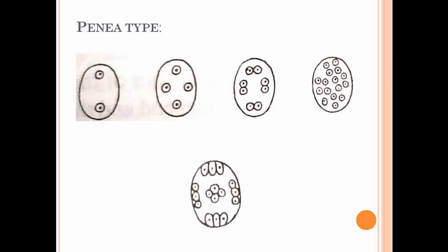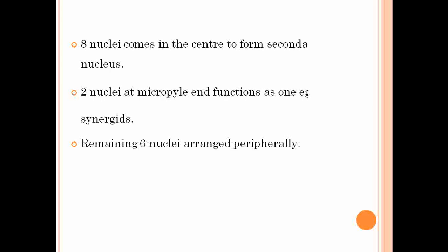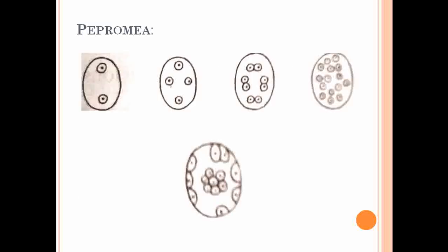The next type is the Penea type of embryo sac. The difference between Peperomia and Penea is only in the arrangement of the 8 nuclei. In the Peperomia type, 2 cells function as the egg apparatus, 6 as antipodal cells, and the middle 8 as the secondary nucleus.